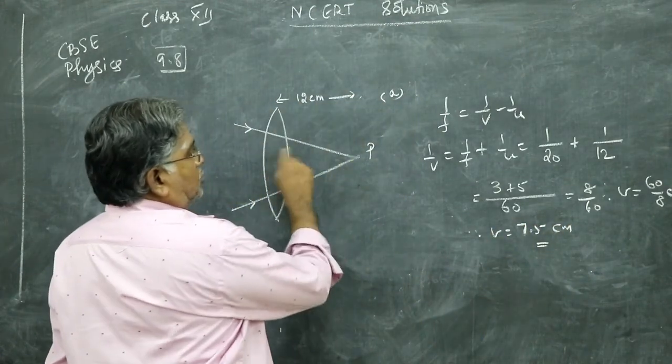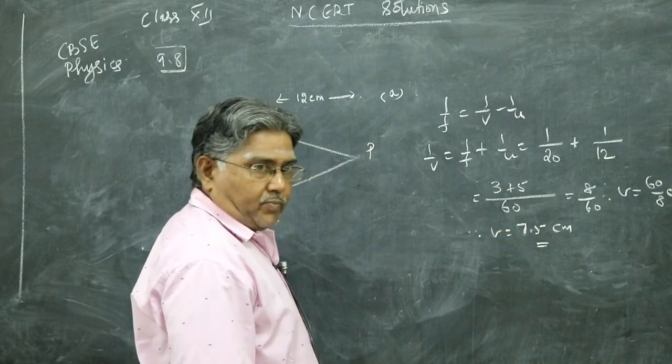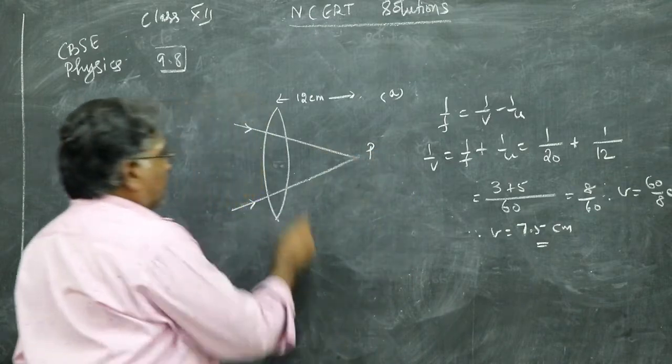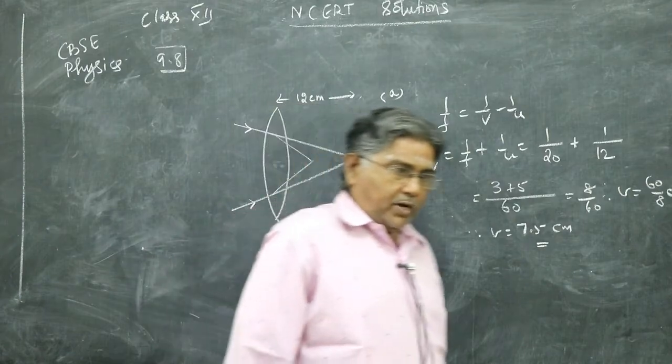Therefore V is equal to 7.5 centimeter. That is closer than this - this is 12, you are getting 7.5, much closer because it is converging. So the ray will converge further, you will get it at 7.5 centimeter.